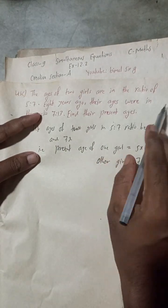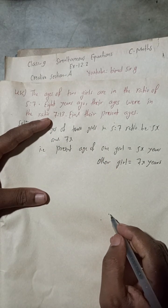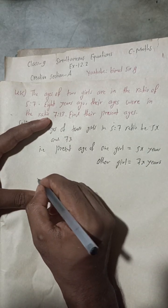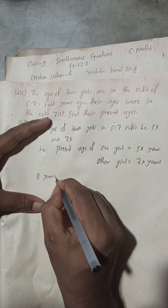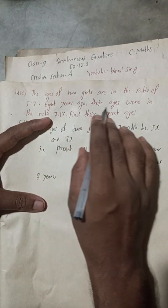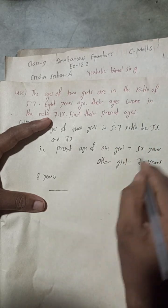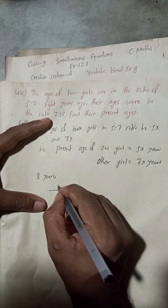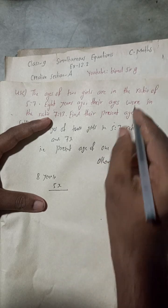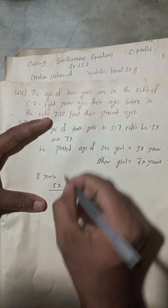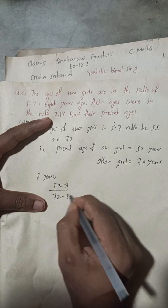Now, 8 years ago their ages were in the ratio 7 is to 13. Eight years ago, the age of the first girl would be 5x minus 8, and the age of the second girl would be 7x minus 8.